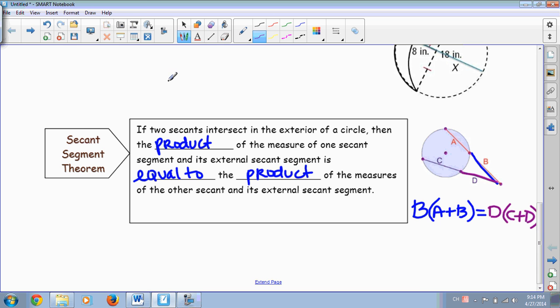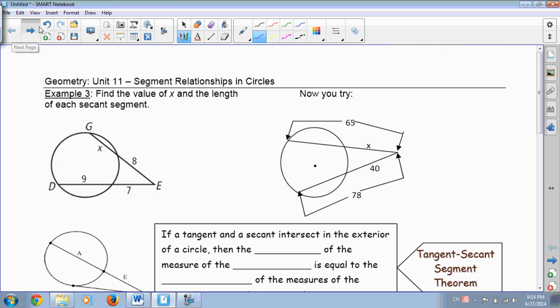Okay, so let's go ahead and look at a question. Example number 3 on the back side, and we're going to use the same concept. Okay, so the outside piece here is 8. So we have 8 times the sum of these two pieces put together would be 8 plus X or X plus 8. And that's equal to the outside piece of this secant is 7 times the sum of them. It would be 9 plus 7 or 7 plus 9, which when you add those together actually becomes 16.